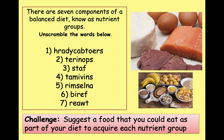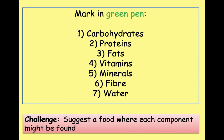I'm going to put the answers up on the screen in a moment. The challenge at the bottom was also to suggest a food you could eat that has each of those nutrient groups — we're going to go through that later in the lesson so you can see how close you were. The seven components of a balanced diet, known as nutrient groups, are as follows: carbohydrates, proteins, fats, vitamins, minerals, fibre, and water. Well done if you got any of those.